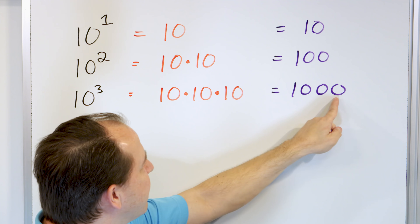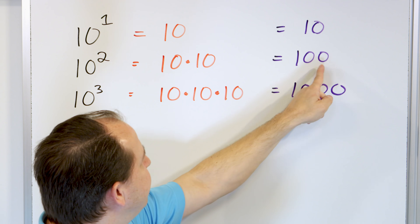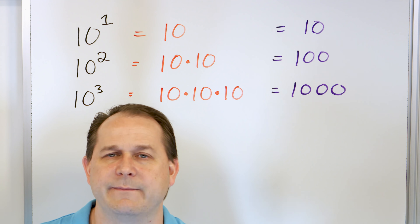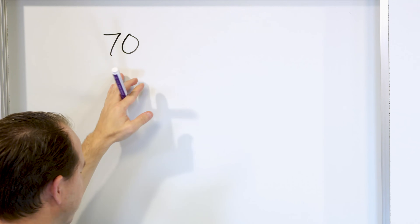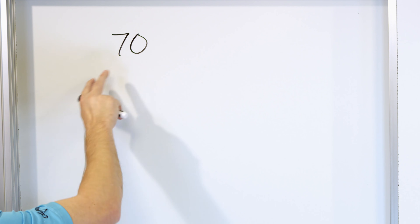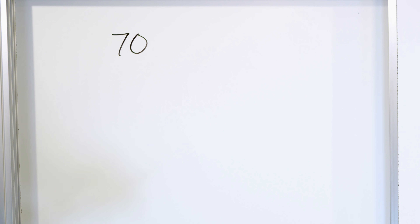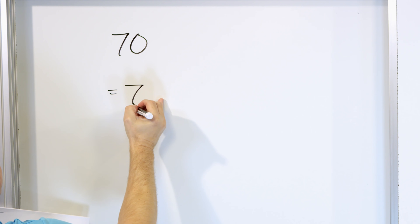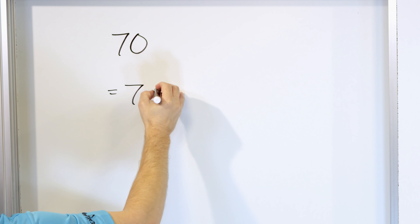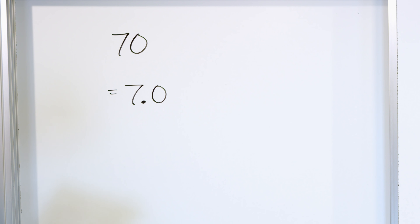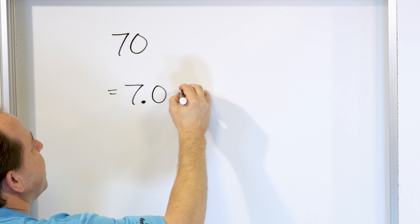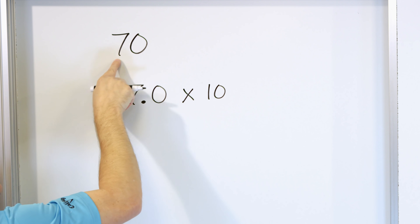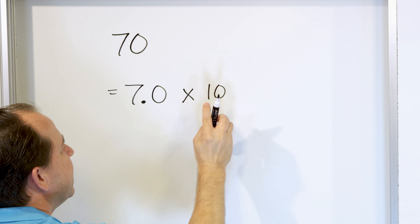Basically, when you have 10 raised to a power, the exponent is just the number of zeros you have. The exponent is 2, there are two zeros. The exponent is 1, there is one zero. That is a special property of powers of 10, which is the number system we use. Keep this in mind as we return to our problem: we want to write the number 70 in scientific notation.